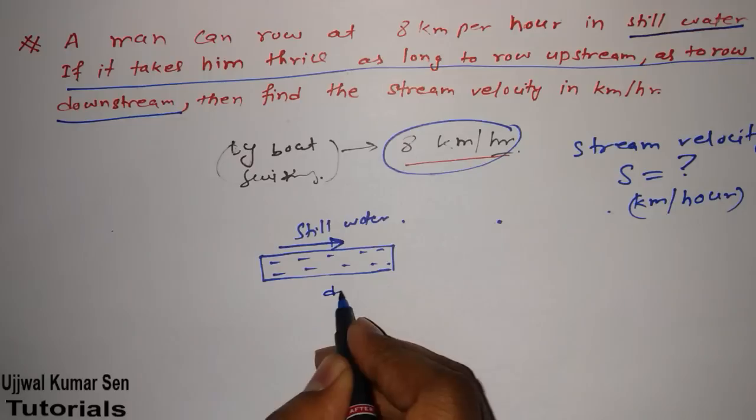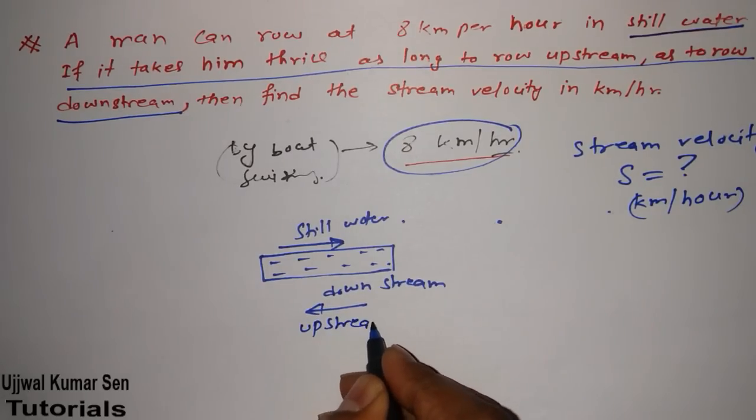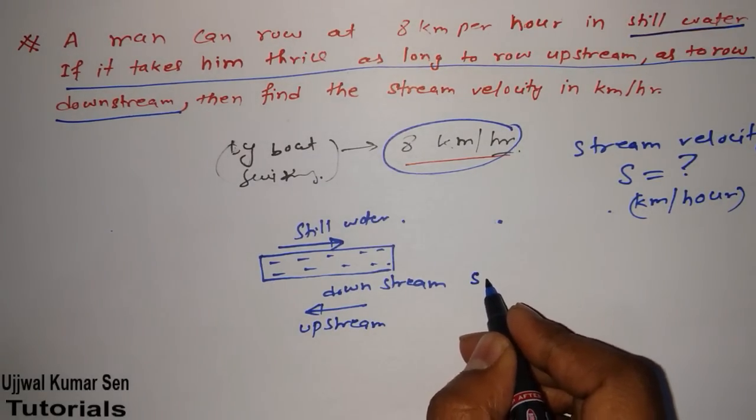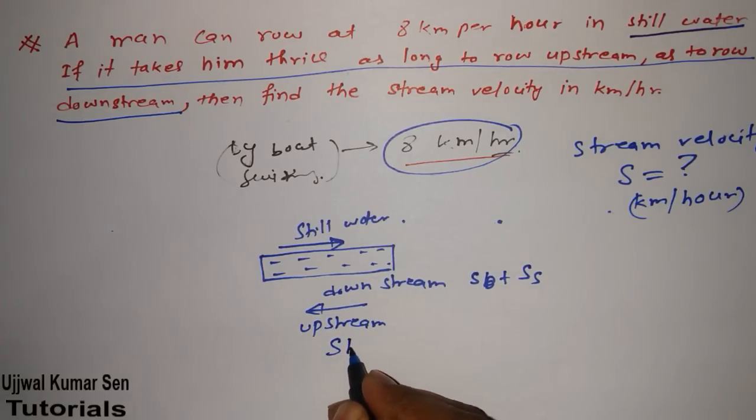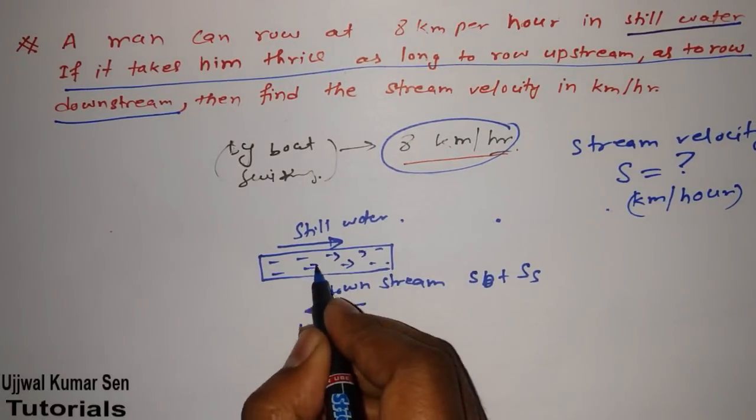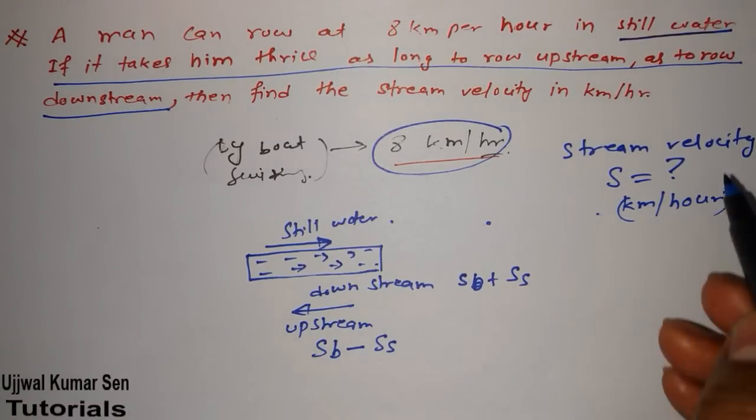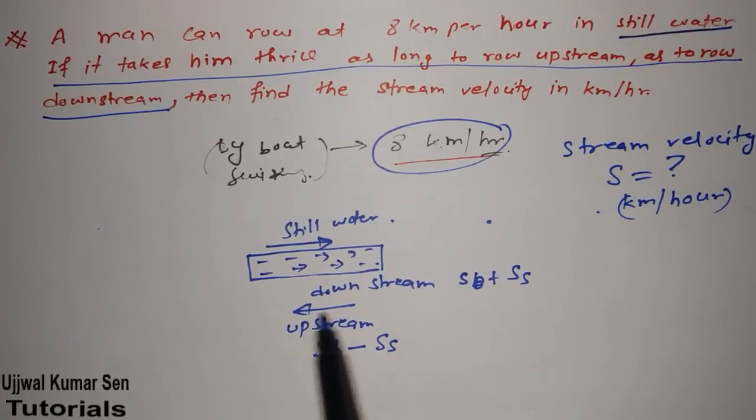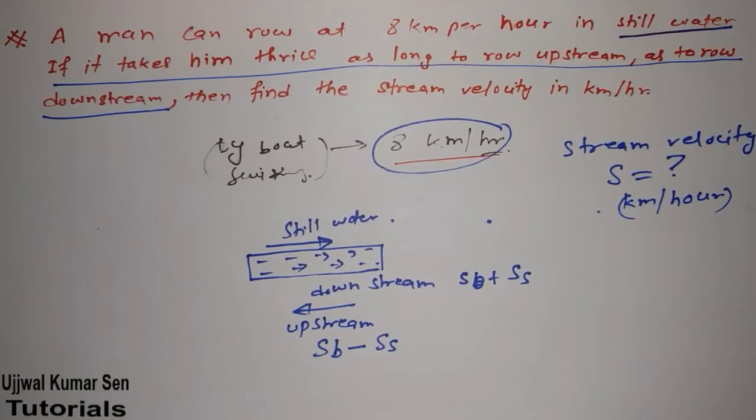So, with the flow is known as downstream. Against the flow is known as upstream. In case of downstream, what will happen? Speed of the person or boat plus speed of the stream. In case of upstream, speed of the boat minus speed of the stream. If the boat is going against the flow, that means speed of the boat minus flow of the water. Flow of the water speed is known as stream velocity. If I am going with the flow, the boat speed will be increasing because of this stream speed.